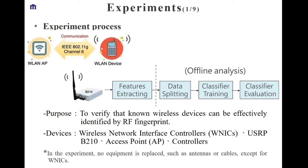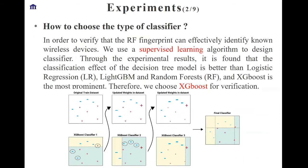We use wireless NICs to collect data. In order to further verify that wireless devices can be effectively identified by fingerprints, we also design a channel classifier for the experiments. Using a supervised learning algorithm to design the classifier, through experimental results it was found that XGBoost has the most prominent performance, so we chose XGBoost for verification. In short, XGBoost is a gradient boosted tree — a combination of many weak learners to become a strong learner.